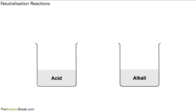To help us understand, a quick recap on a previous video on acids and alkalis. Here we have an example of an acid and an alkali, and we can use something called universal indicator to help us identify which is the acid and which is the alkali.